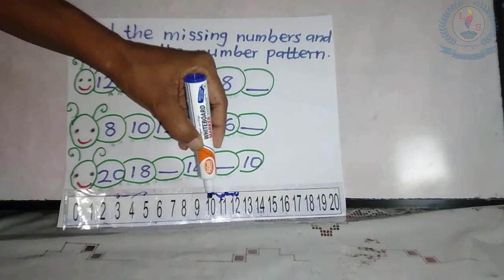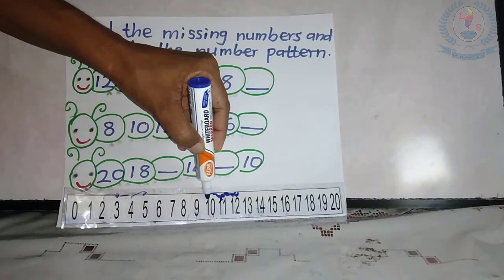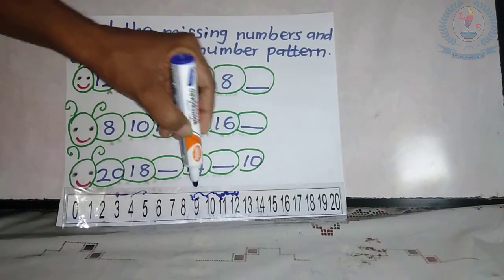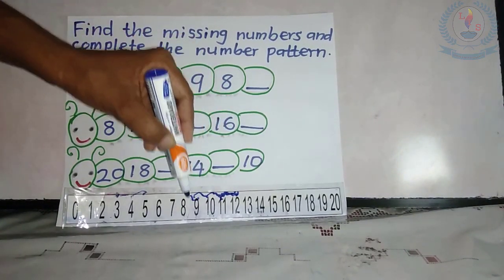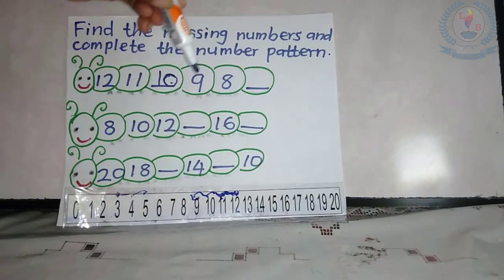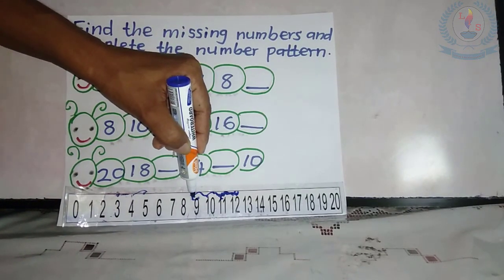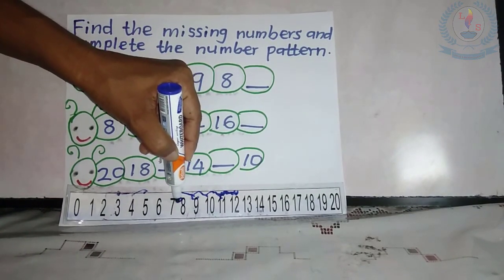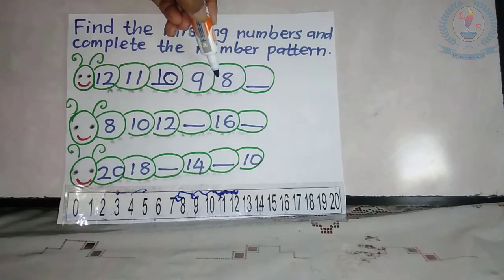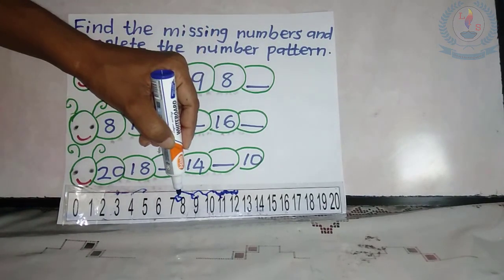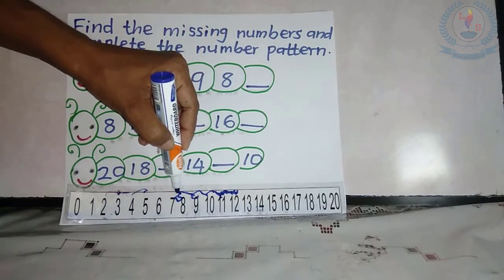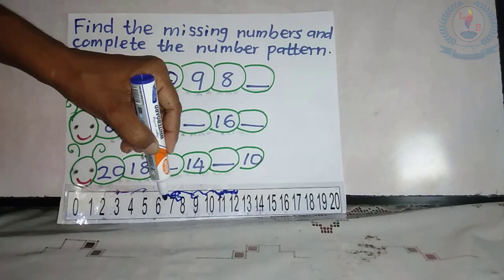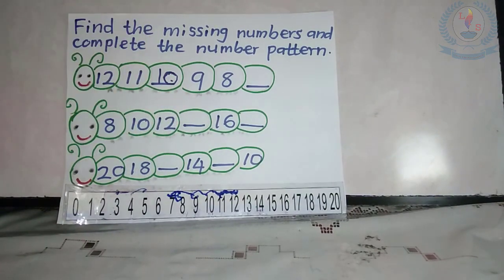We count back in 1's. What comes next? Yes, 9. We count back in 1's. What comes next? 8. Again, we count back in 1's. What comes next? Yes, 7.